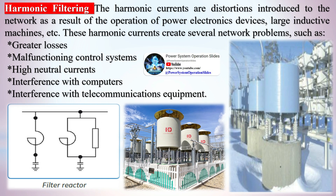Harmonic filtering: harmonic currents are distortions introduced to the network as a result of the operation of power electronics devices, large inductive machines, etc. These harmonic currents create several network problems such as greater losses, malfunctioning control systems, high neutral currents, interference with computers and telecommunications equipment. Most utilities impose high fees when a certain harmonic distortion level (HDL) threshold is reached.